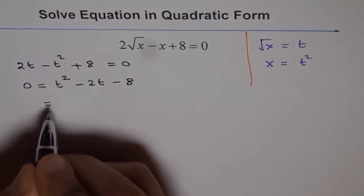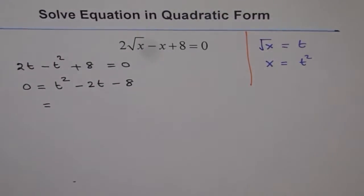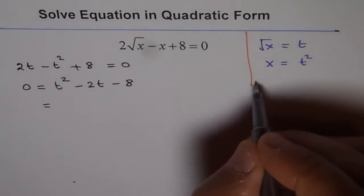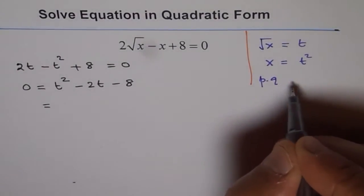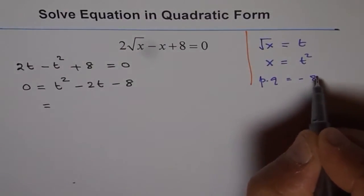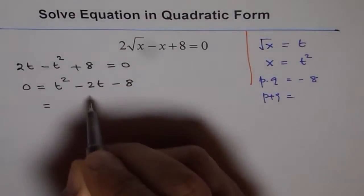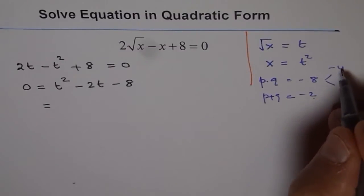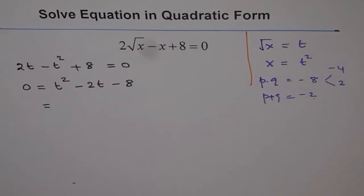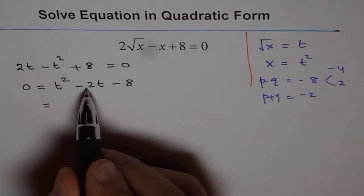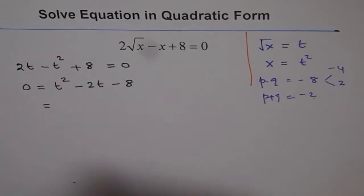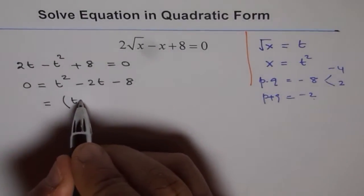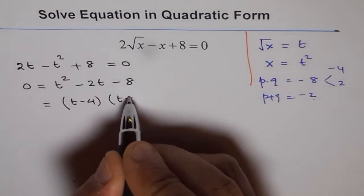Now this can be factored. So for factoring, we need two numbers whose product is minus 8. So let's say our numbers are p and q and their product is minus 8. And when you add them, you should get minus 2. So the two numbers could be minus 4 and 2. When you add them, you get minus 2. When you multiply, you get minus 8. So we can factor this very easily by substituting minus 2 as minus 4 and 2. Now so we get t minus 4 times t plus 2.